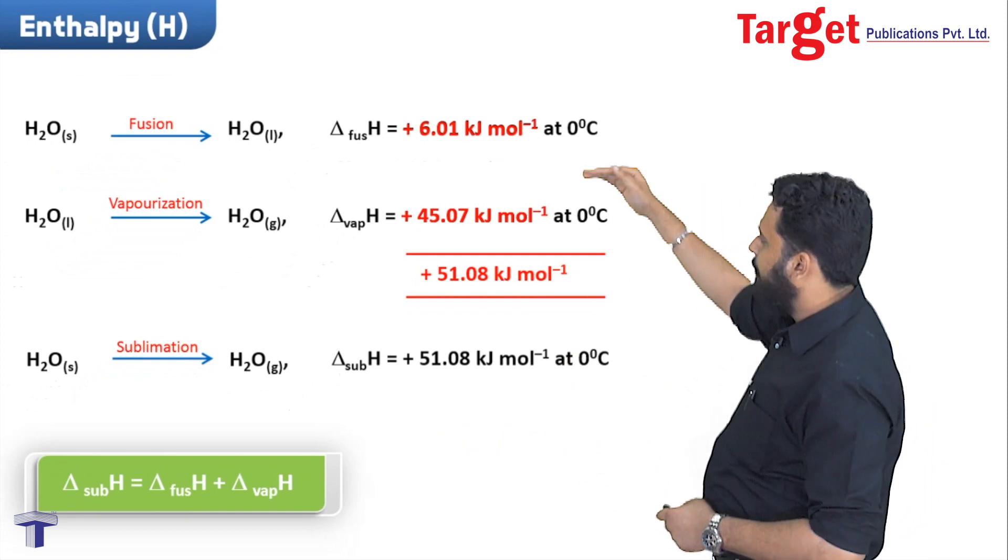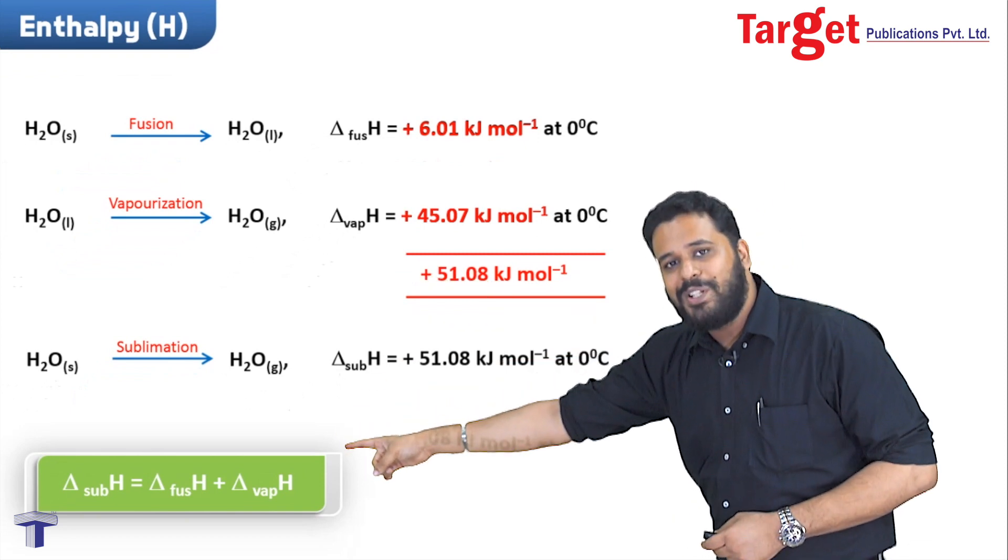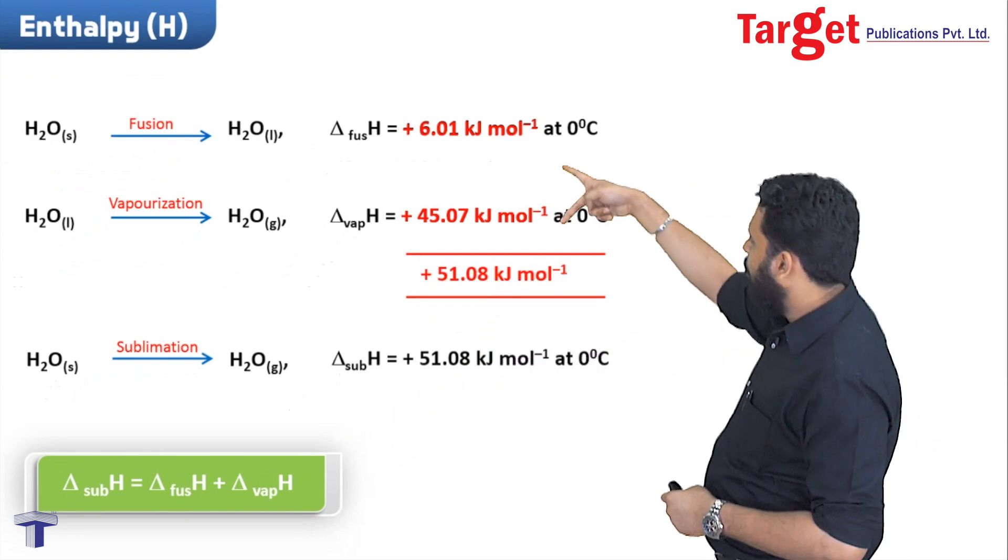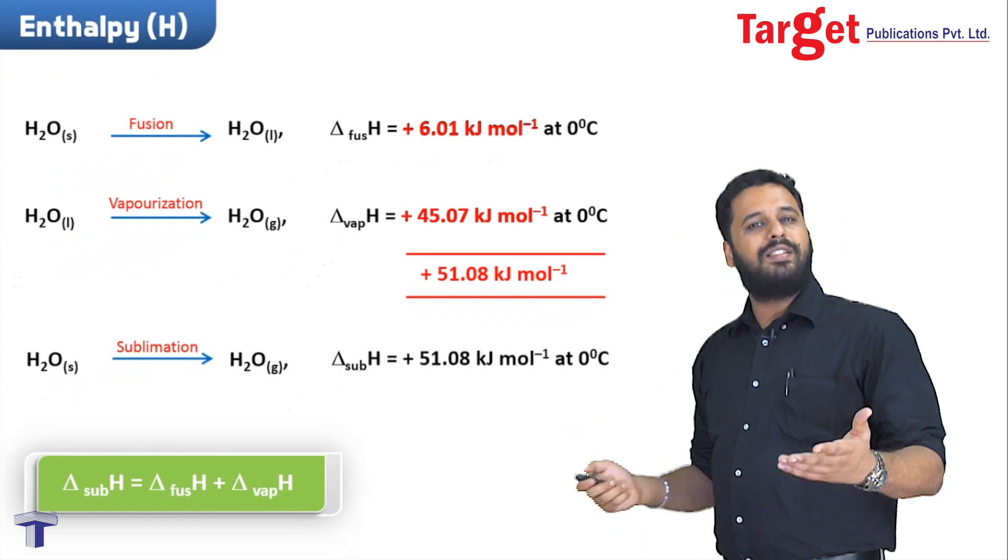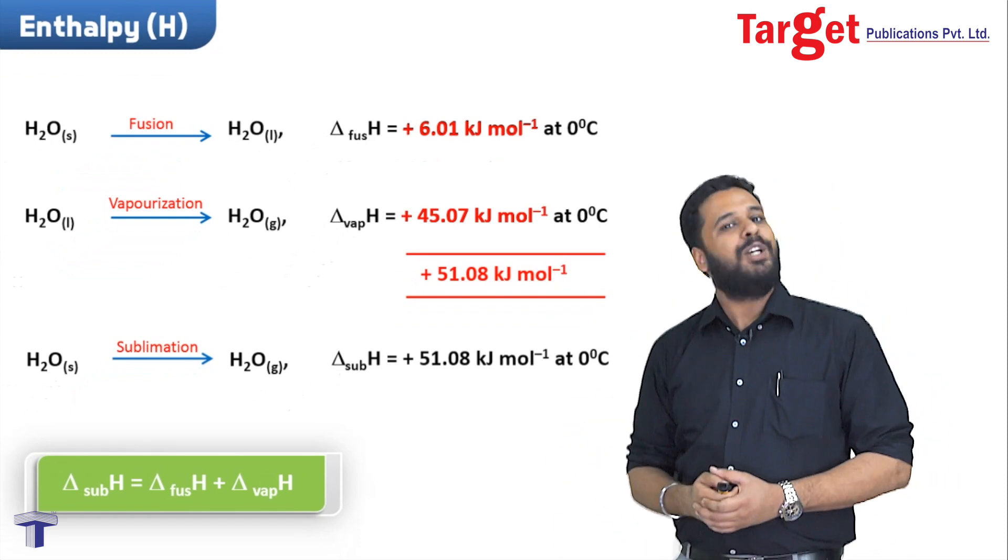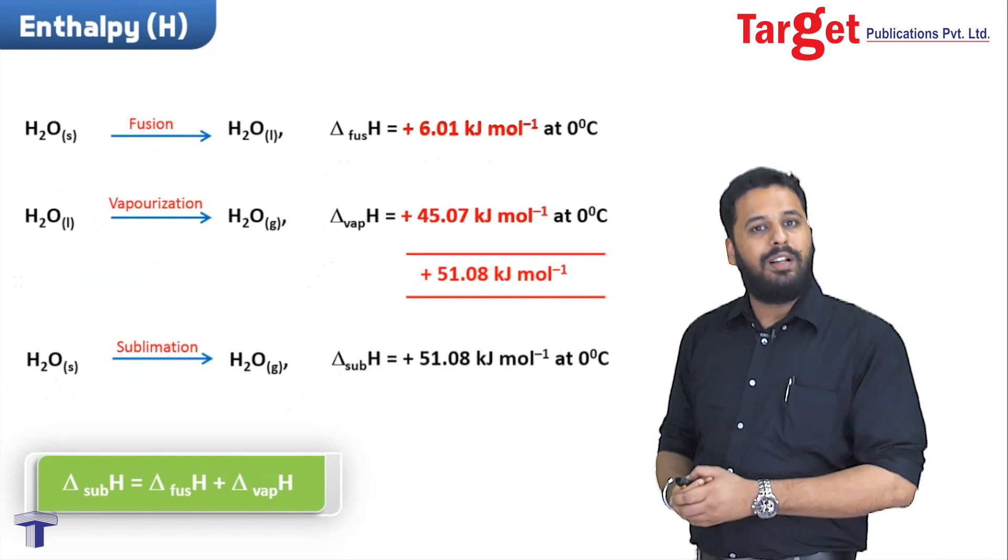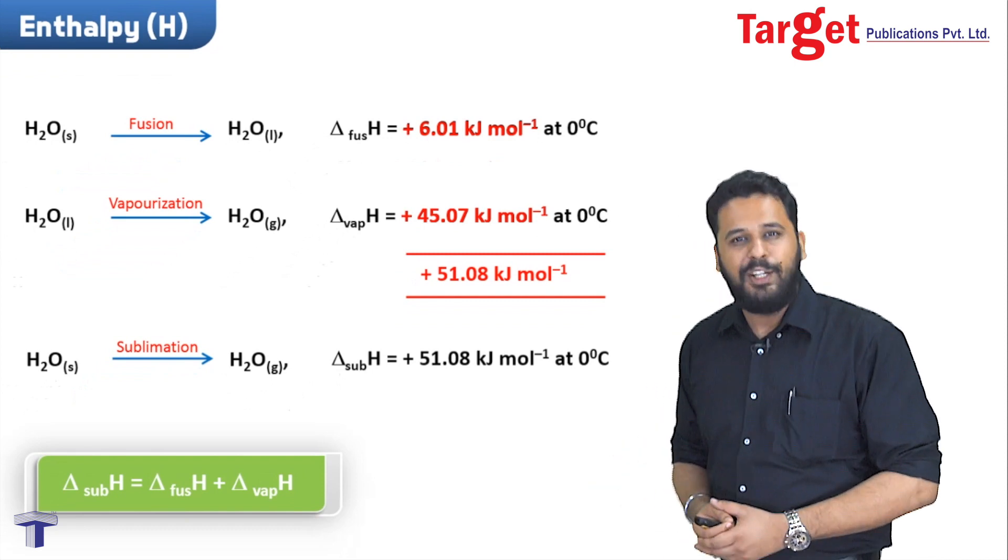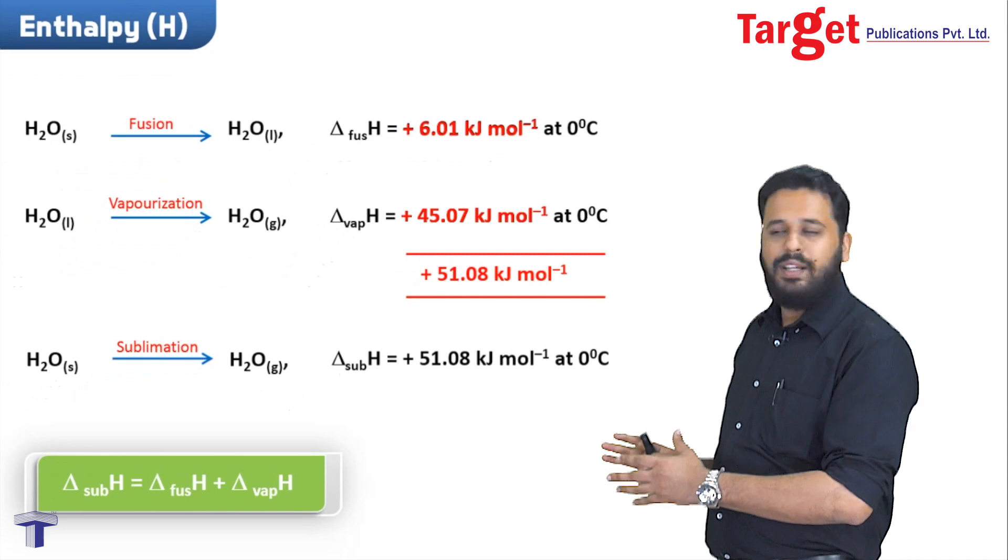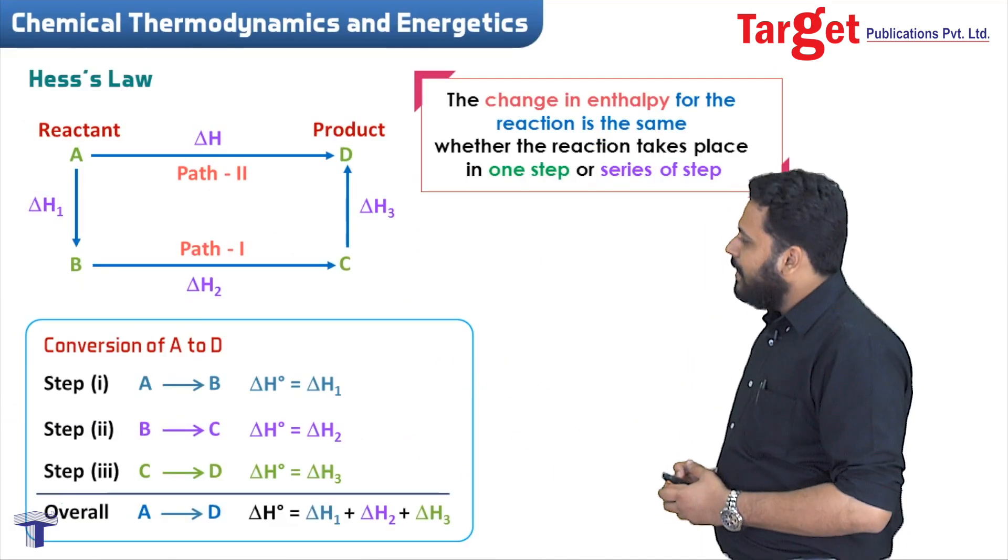If we keep doing this, just as we get the final equation, we'll also get the delta H value. Like here when we added both equations we got the sublimation equation, and when we added these we got our given value. This is how Hess's law numericals work, which are very easy to solve. If such a numerical appears in your board exam or school exam, you really should not leave it - these are easy marks you should never miss.